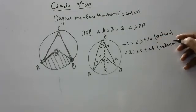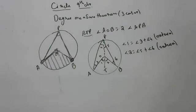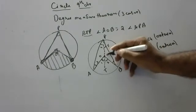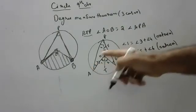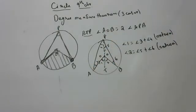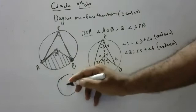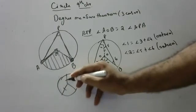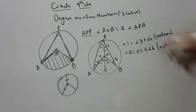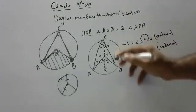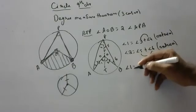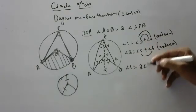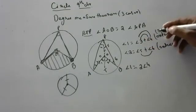Exterior angle is equal to the sum of interior opposite angles. So angle 1 equals angle 3 plus angle 4. Angle 2 equals angle 5 plus angle 6. Now, OE and OP are equal — can anyone say why? Because they are both radii. So this and this are equal because they are radii.